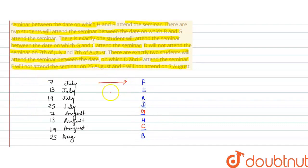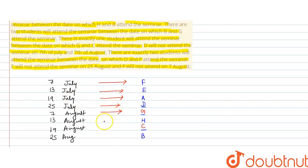The final arrangement obtained is: 7th July — F, 13th July — E, 19th July — A, 25th July — D, 7th August — G, 13th August — H, 19th August — C, 25th August — B.